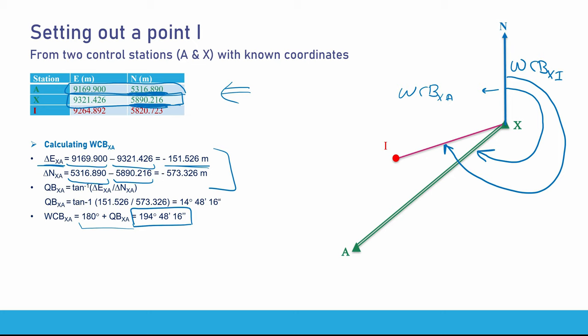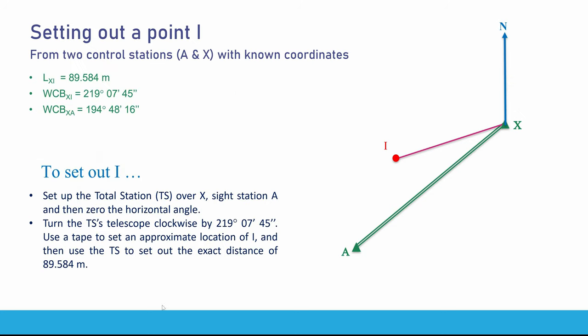After calculating the whole circle bearing of XI and the whole circle bearing of XA, you can stop and go to the ground to set out point I. There are in fact two methods to set out point I. The values we need are: the length of XI — 89.584 meters — the whole circle bearing of XI, and the whole circle bearing of XA.